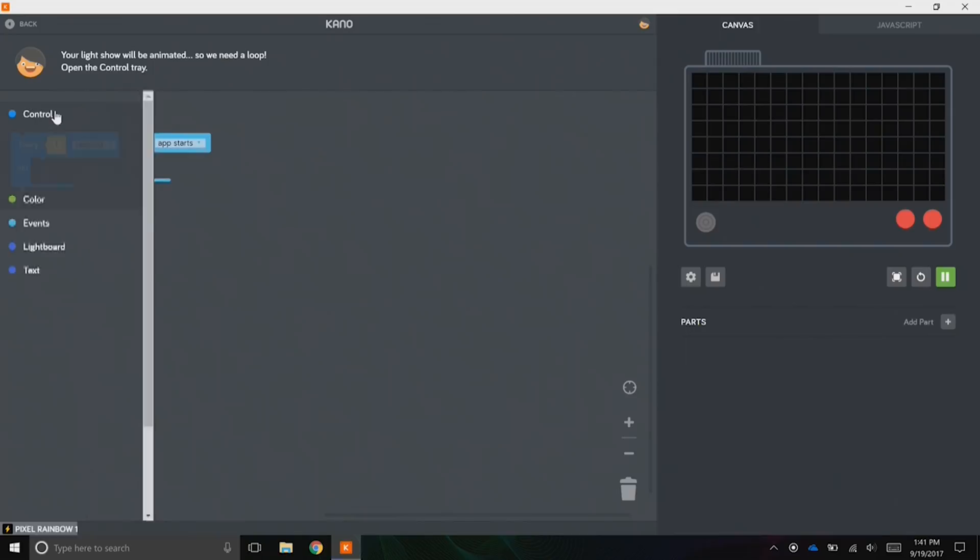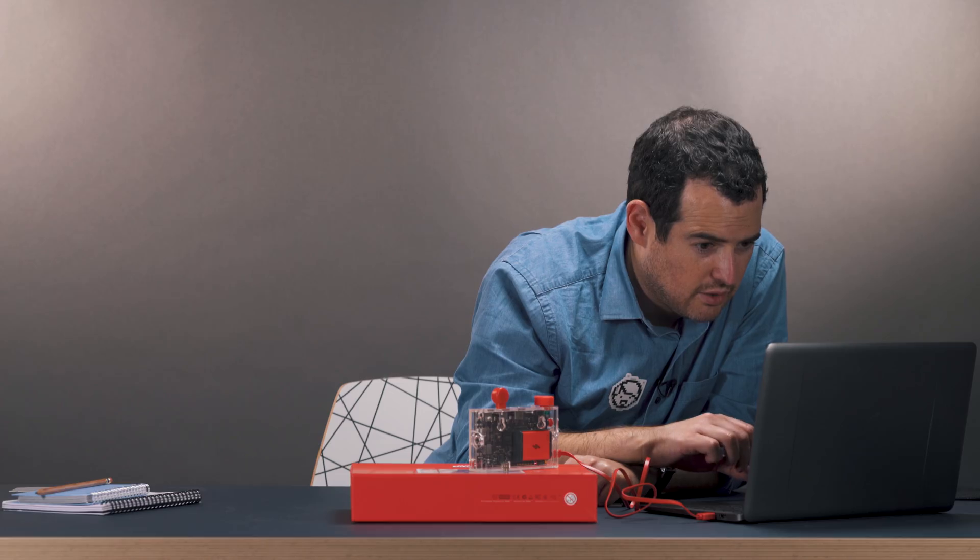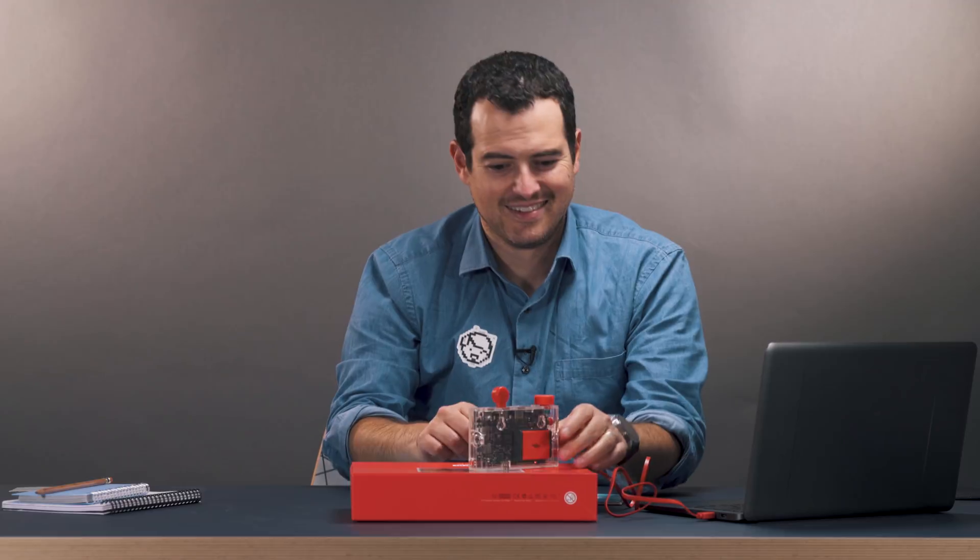I've got these golden diamonds, something to do. So control - this is control. So every one second do something. That's what I wanted to do: when the app starts, every one second I'm going to light board turn light on. So then drag that there. We go. I did something! I made that light up. I did that.